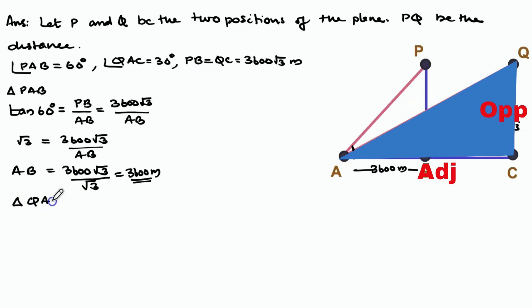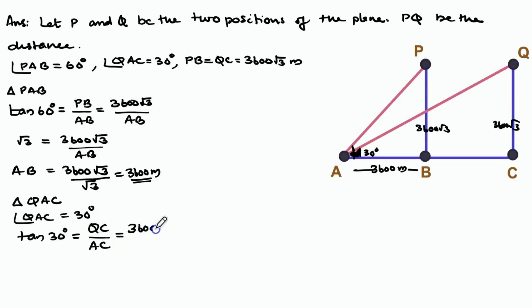In triangle QAC, angle QAC equals 30 degrees. We can use tan 30 degrees equals QC by AC. QC equals 3600 root 3. 3600 root 3 by AC. Tan 30 degrees is 1 by root 3. 1 by root 3 equals 3600 root 3 divided by AC. AC equals 3600 root 3 into root 3 equals 3600 into 3 equals 10,800 meters.